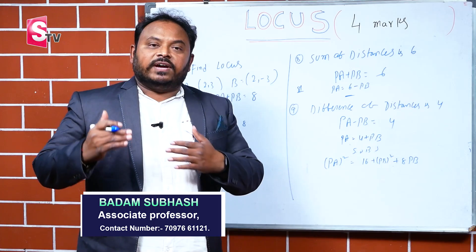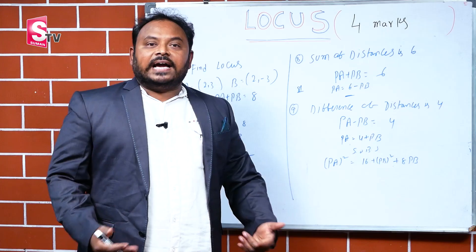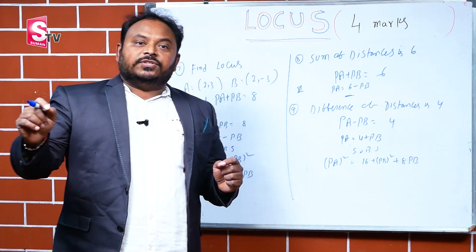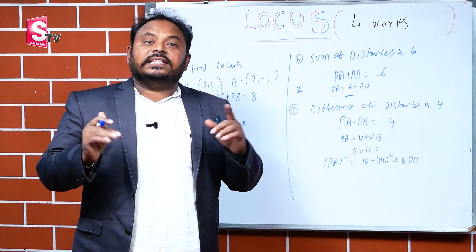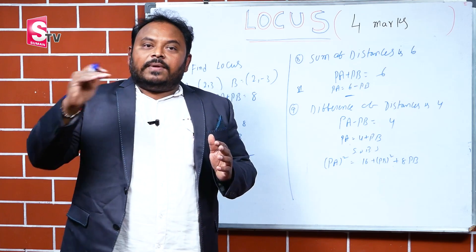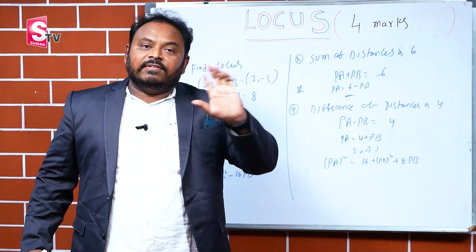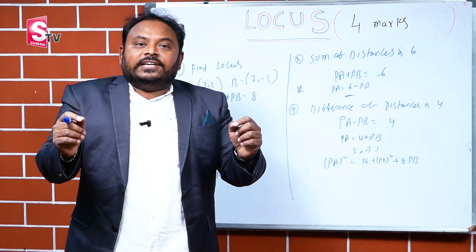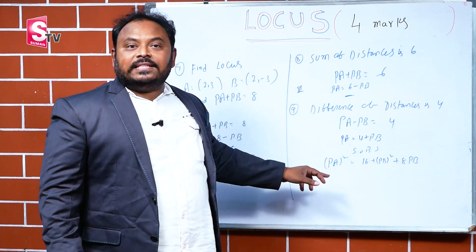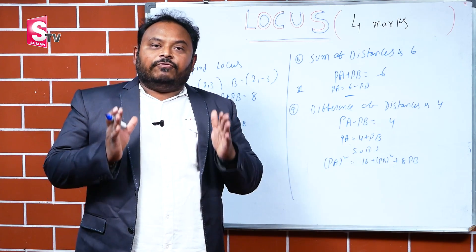Solving we can get the answer. In the conclusion, write: the equation of the locus is — for that they will give one mark. According to the scheme of valuation, first write let P(x, y) be any point on the locus — one mark. Write the given geometrical condition — one more mark. After substitution of values, one mark for the working. And for the last conclusion, one mark. So you can get four marks total.